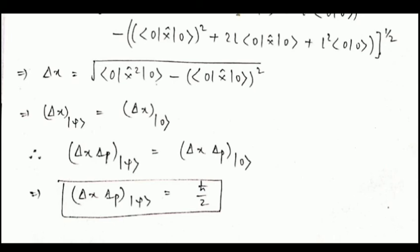Therefore, the product Δx·Δp in the new state equals the product Δx·Δp in the ground state. Since the right-hand side is given in the question to be ℏ/2, the product of uncertainties in the state e^(−ipℓ/ℏ)|0⟩ is equal to ℏ/2. You could have chosen the right answer just by carefully observing the options, but this formal derivation illustrates how to do calculations in quantum mechanics.